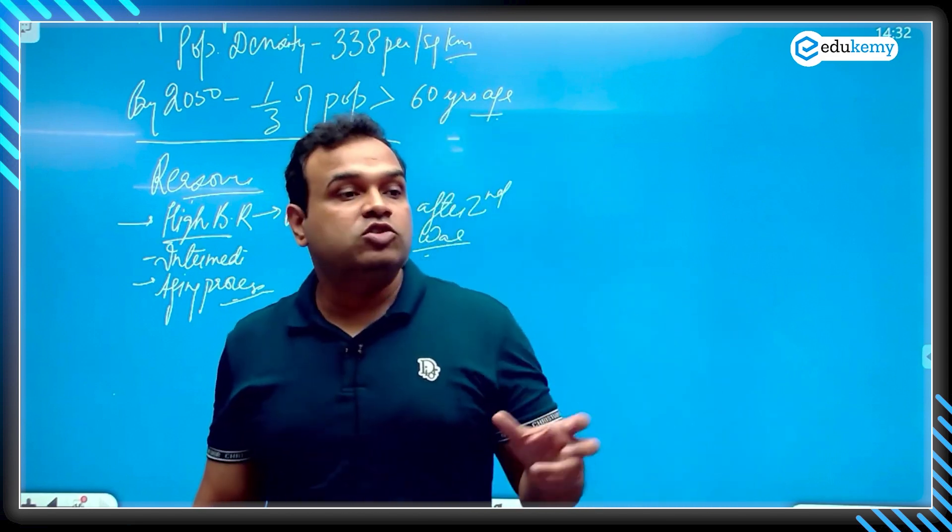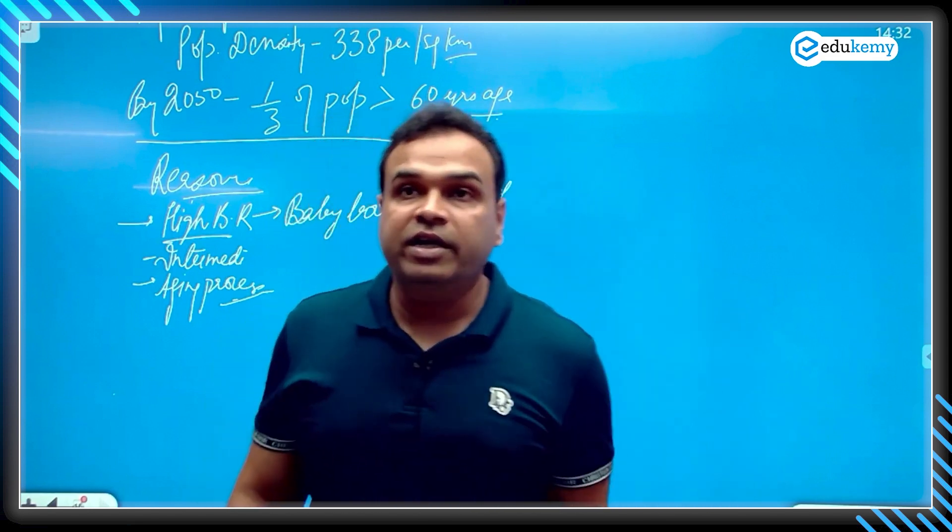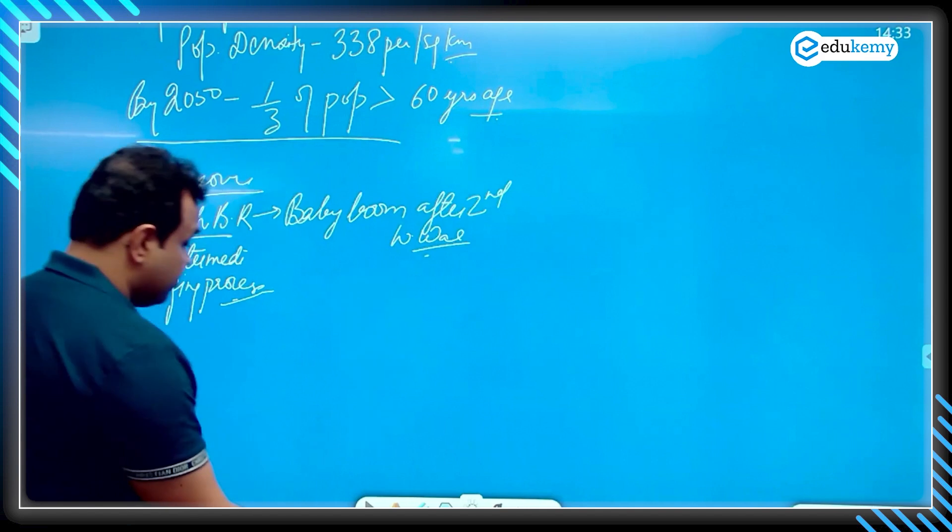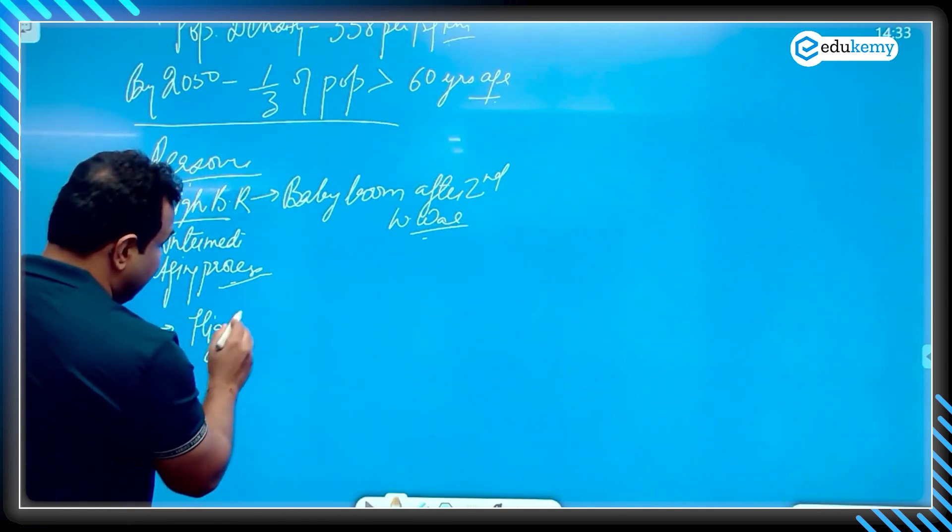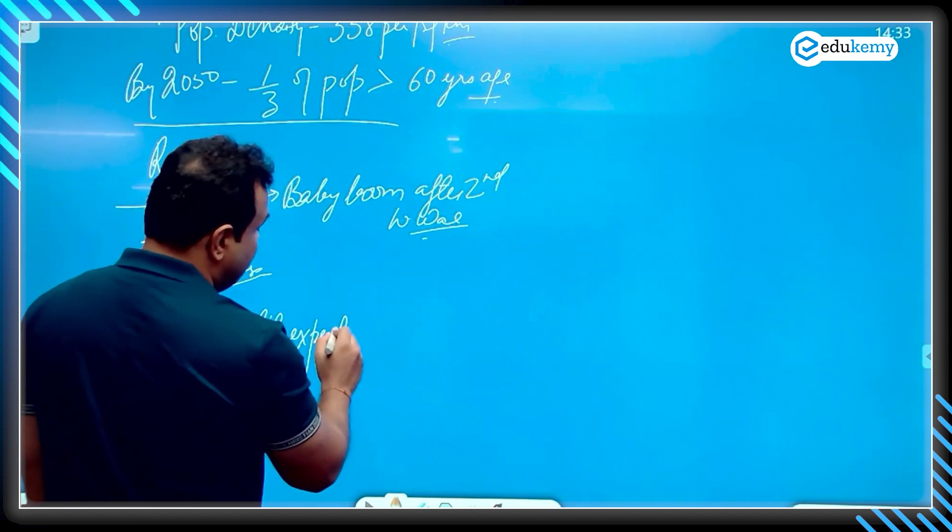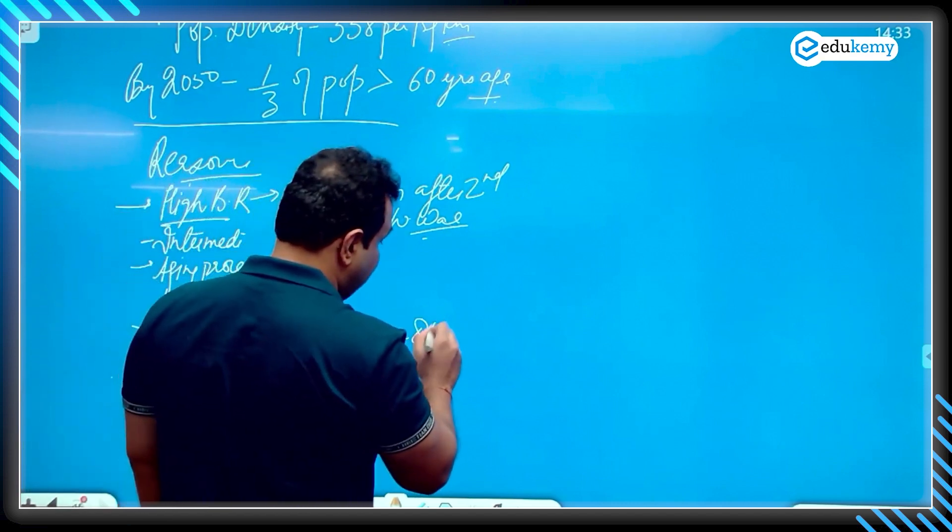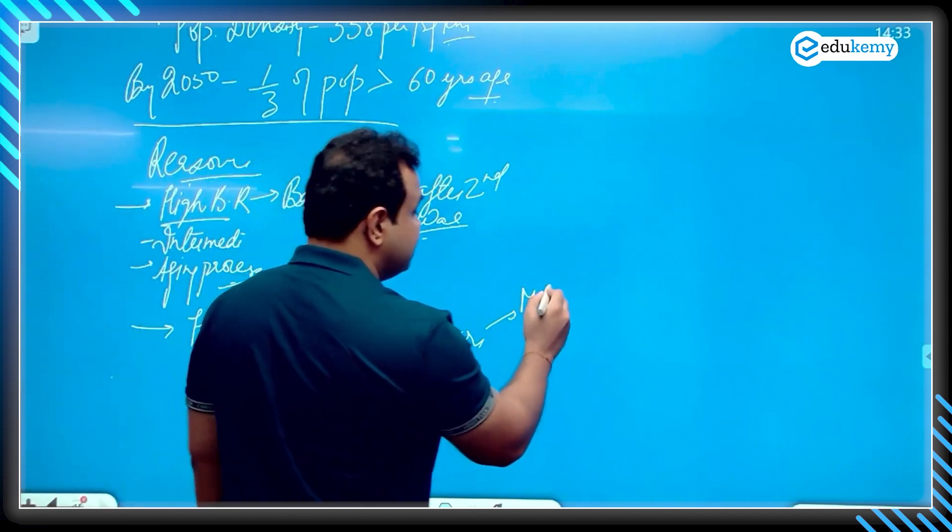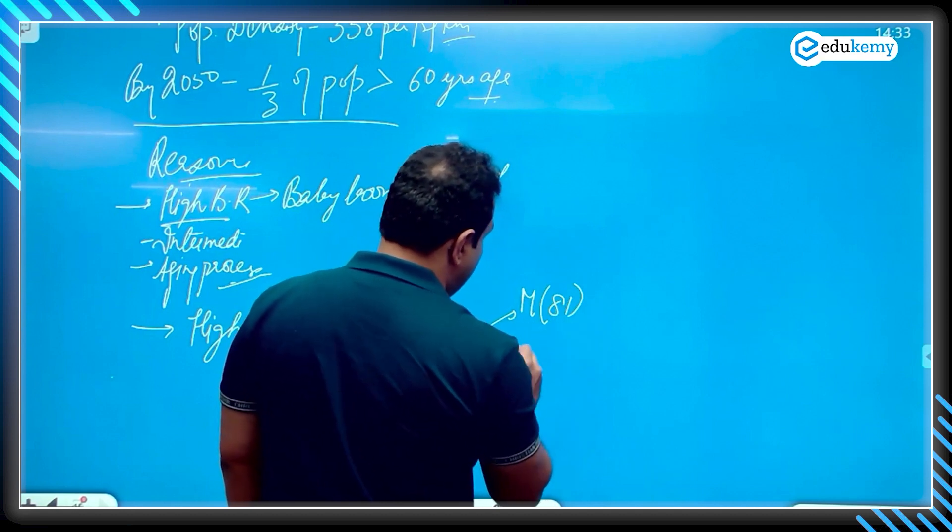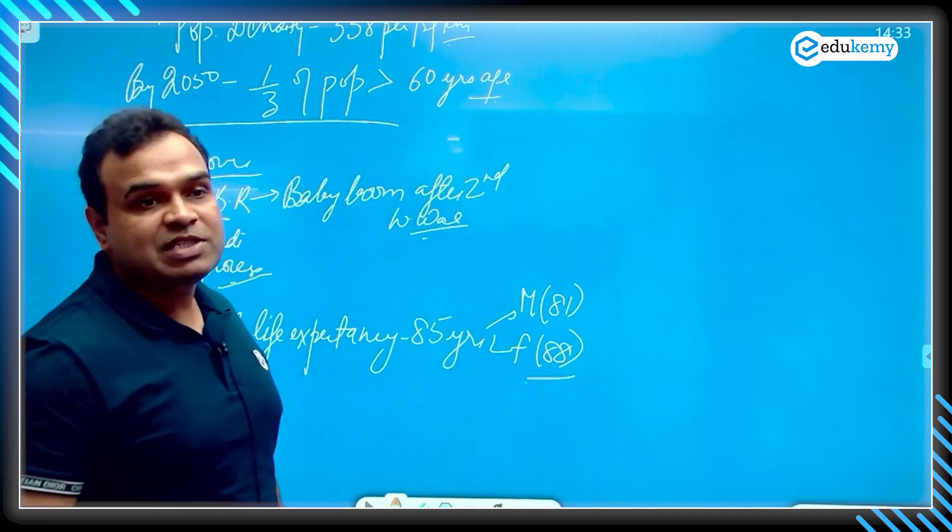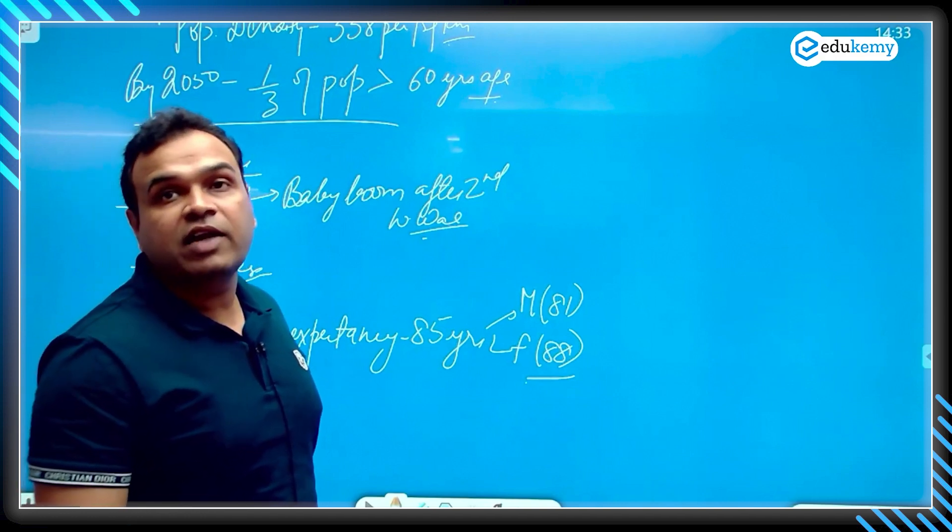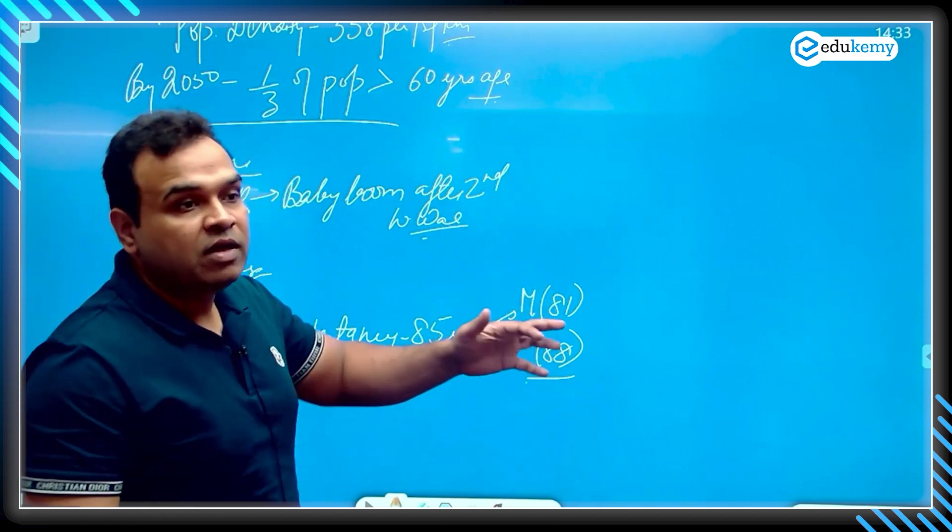One reason is high life expectancy, about 85 years of age. For male it is 81 and for female it is 88. Why do females always have higher life expectancy? It's not about Japan, every country has this status.